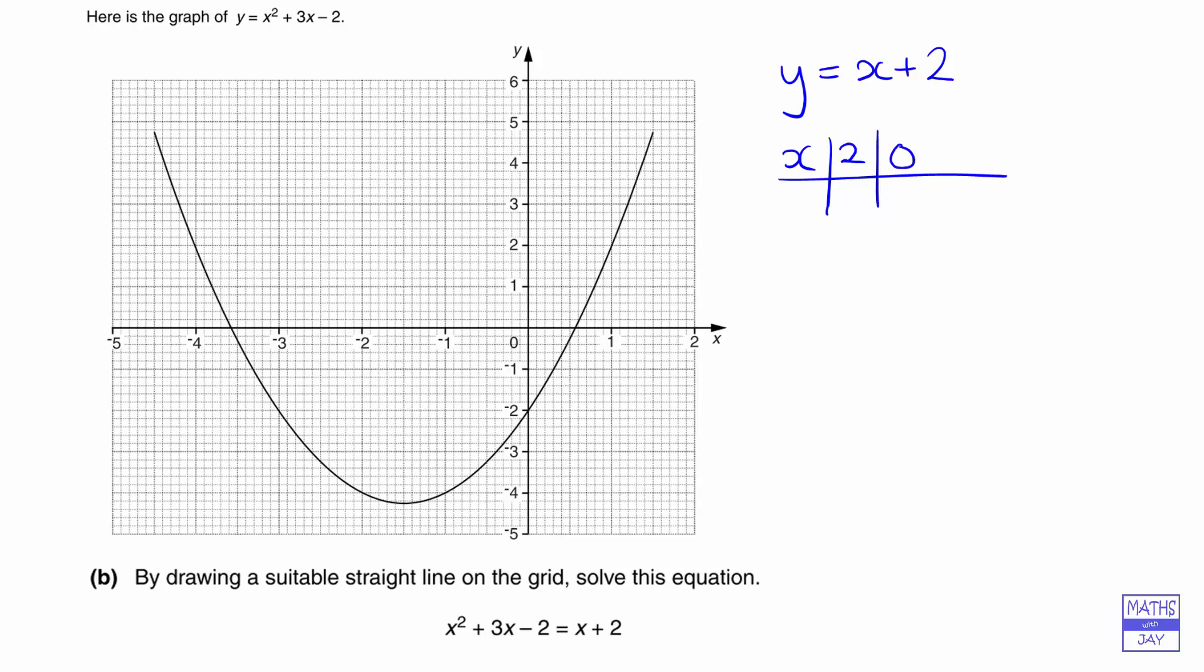And it'll be quite useful to know where it crosses the axis, so let's have x is 0, and then we'll have x is minus 2 as well. Because we know this is going to be a straight line, we only need two points, but one is a check.